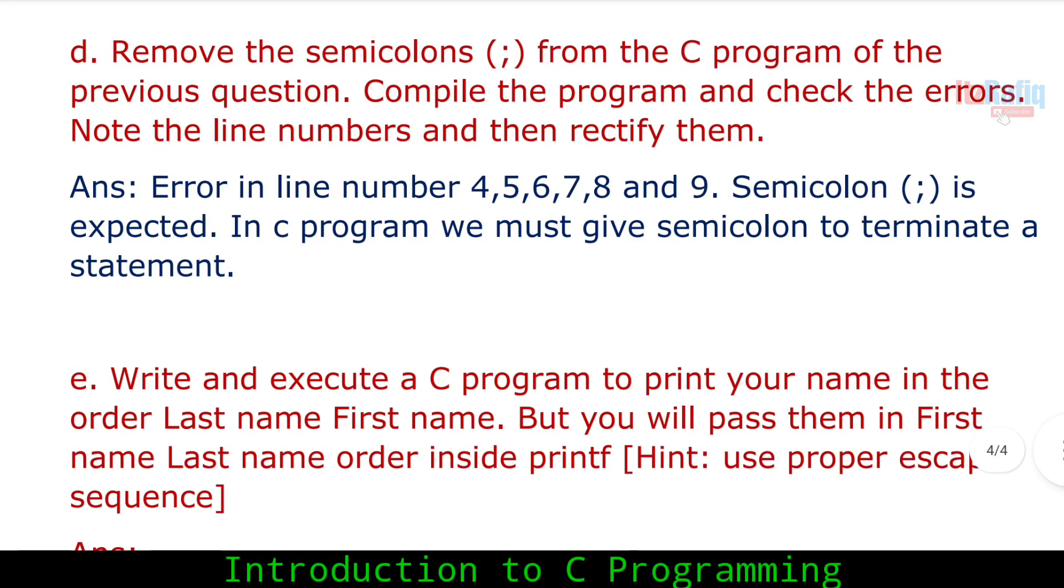The compiler gives a direct error: the error in line number 4 says semicolon is expected. According to the error in line number 5, semicolon is expected. So mainly the errors tell us where the semicolon is needed.